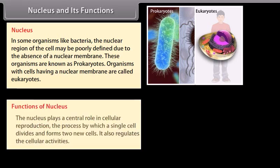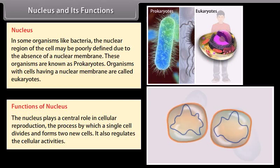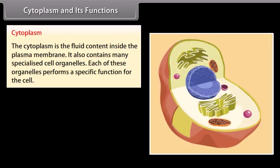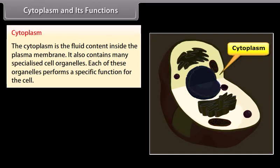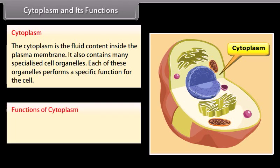Functions of nucleus and cytoplasm: The nucleus plays a central role in cellular reproduction — the process by which a single cell divides and forms two new cells — and also regulates cellular activities. The cytoplasm is the fluid content inside the plasma membrane. It also contains many specialized cell organelles, each of which performs a specific function for the cell. All cell organelles are embedded in the cytoplasm.